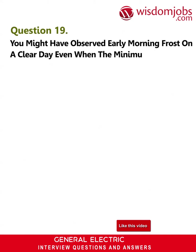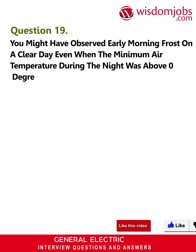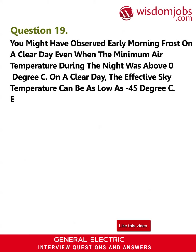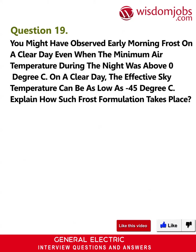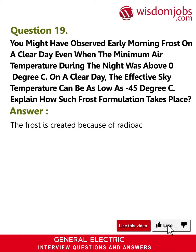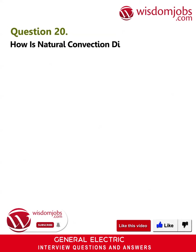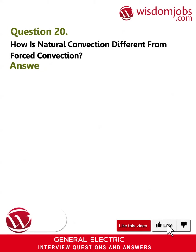Question 19: You might have observed early morning frost on a clear day even when the minimum air temperature during the night was above 0°C. On a clear day the effect of sky temperature can be as low as -45°C. Explain how such frost formation takes place. Answer: The frost is created because of radiative losses to the sky.